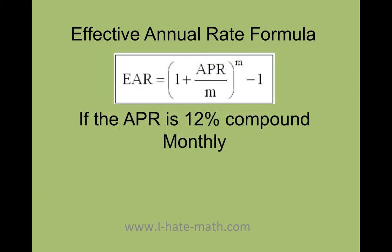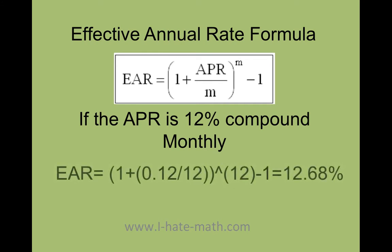So let's see. Let's pretend your APR is 12% and it's compounded monthly. You just go ahead and put 0.12 because you have to do it as a decimal, divide it by 12, then plus 1 and elevate it to the 12, minus 1, and you get your answer.